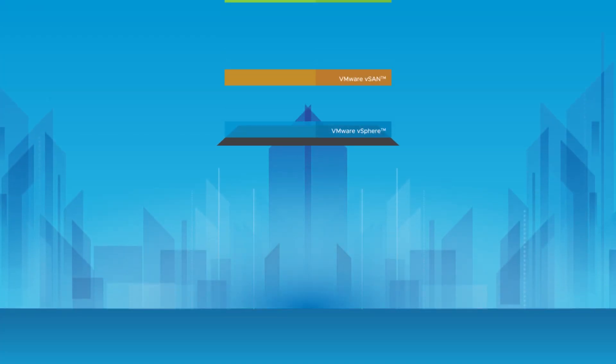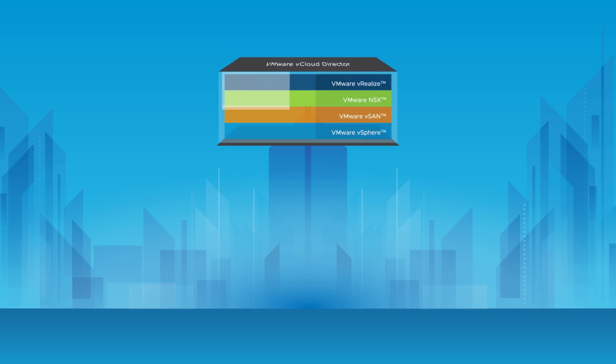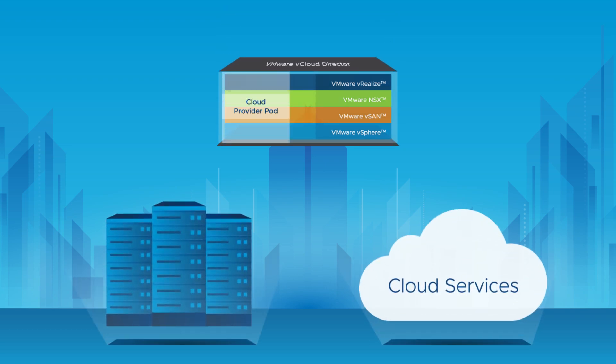vCloud Director is a two-sided cloud provisioning and cloud management platform. It is available to all of VMware's cloud provider partners. VMware cloud provider partners use vCloud Director to provision infrastructure and cloud services for enterprises to consume. vCloud Director also has a tenant-facing site where enterprises consume cloud resources and services such as disaster recovery and backup data protection through a cloud provider partner.